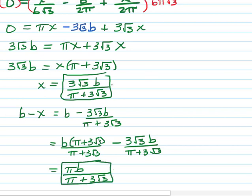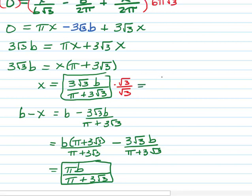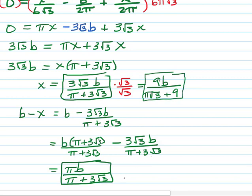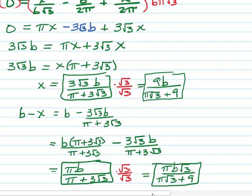I noticed in my math lab that they wrote it in an equivalent form — if you multiply through, you get 9B over pi root 3 plus 9 in the denominator. This is just an equivalent way of writing the same expression, and the same can be done with the B minus X expression. There's no one right way to write it. So you might see the other piece written differently. I hope you found this video helpful — please remember to like it and give it a thumbs up, as that helps other students find the video.